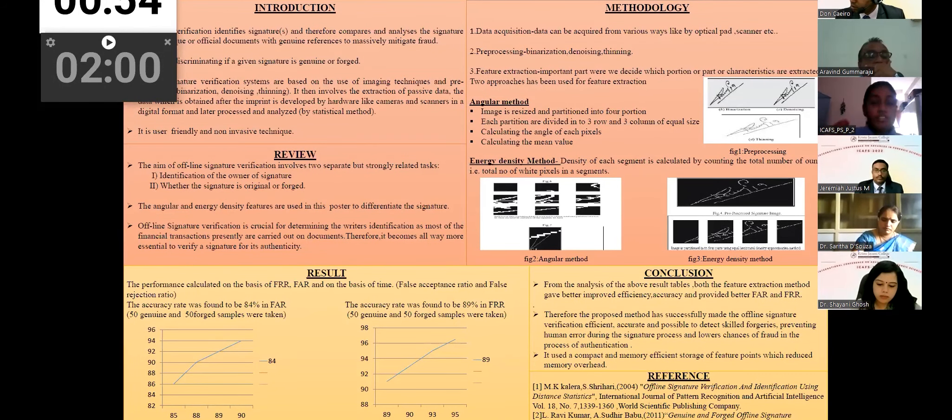So from the above analysis, from the result table, both the feature extraction methods gave an improved efficiency and accuracy provided with the FAR and FRR. From this, we can infer that this proposed method has successfully made offline signature verification efficient, accurate and possible to detect the forged skill forgeries and preventing human errors during the signature process and lowers the chances of fraud in the presence of authentication. It was a compact and memory efficient storage of feature points to reduce the memory overhead. Thank you. That's all about my presentation.